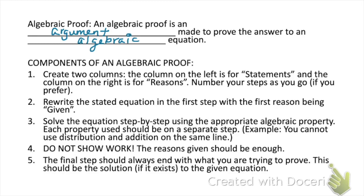Just like in Algebra 1 where you learn how to do a step-by-step equation and solve it, we're going to be doing something very similar, but we're going to be doing it by writing a proof. The components of an algebraic proof are listed below, so take a moment and go ahead and read through these.